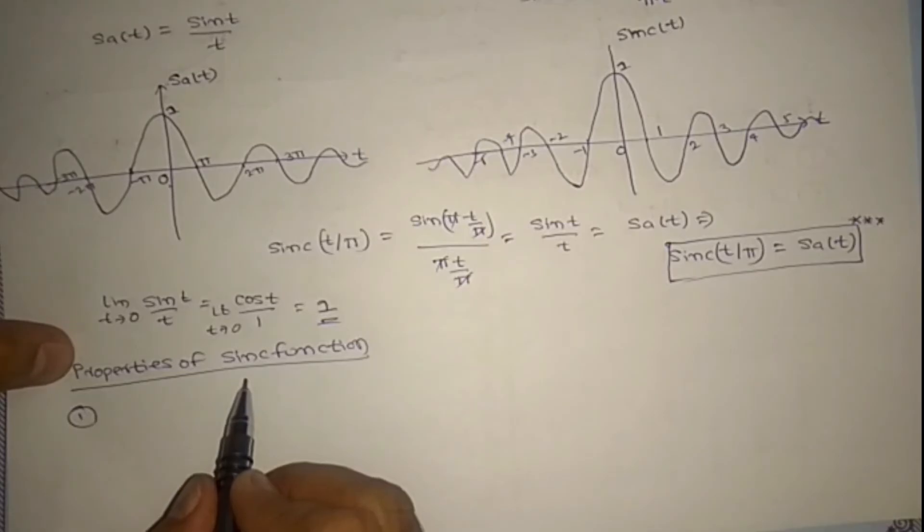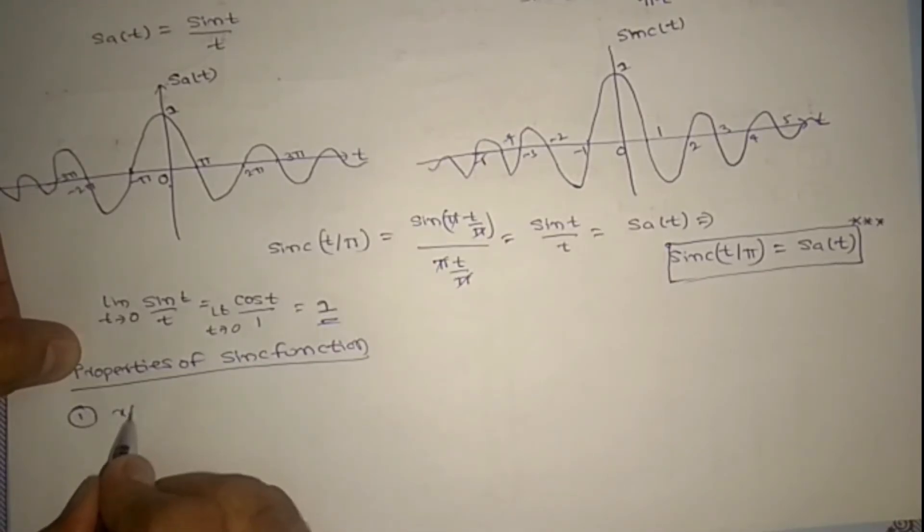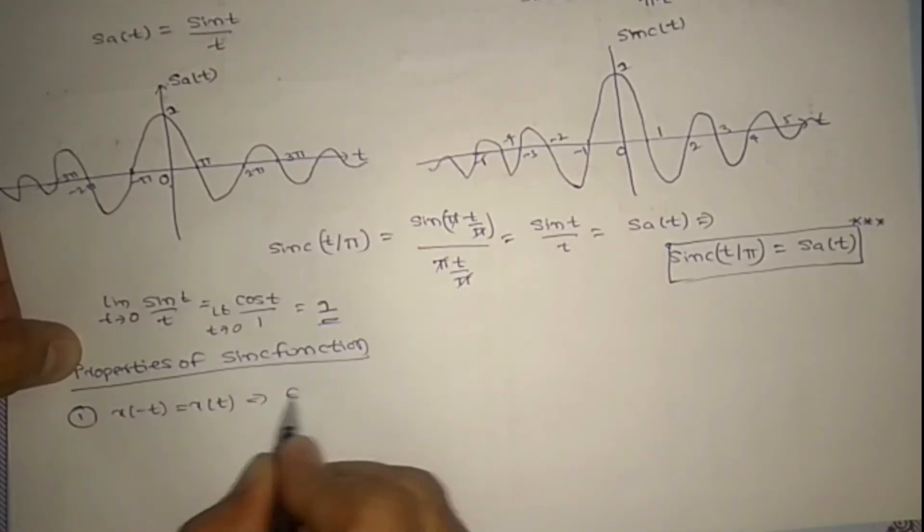Properties of sinc function. So now it is an even signal or odd signal. x of minus t equal to x of t, so it is an even signal.